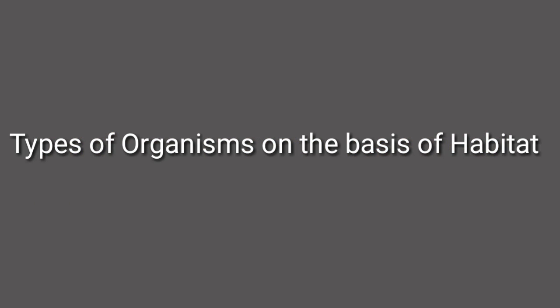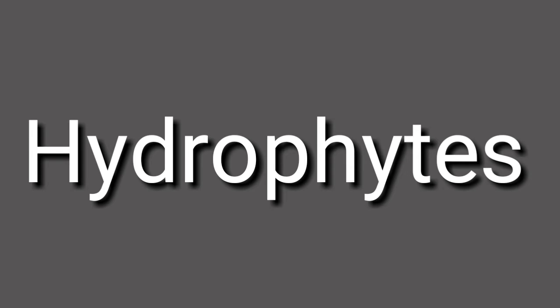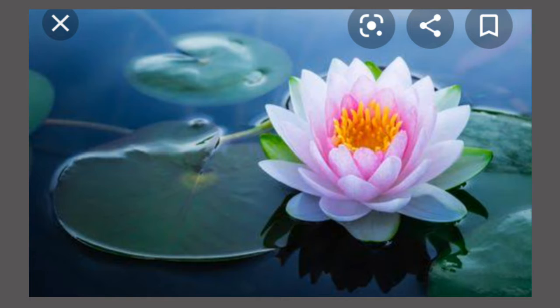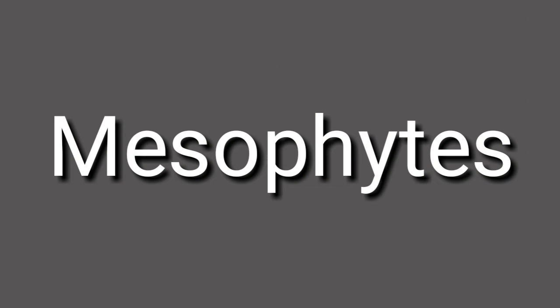Now let's discuss types of organisms. On the basis of habitat, organisms can be divided into two groups: plants and animals. Let us discuss one by one. First, types of plants on the basis of habitat. The first type is hydrophytes — plants which live in water are called hydrophytes, like lotus, water lily, and water chestnut.